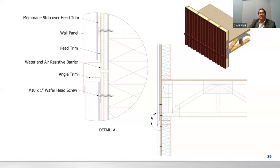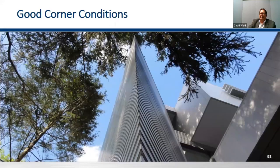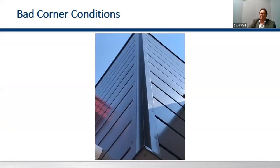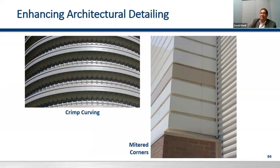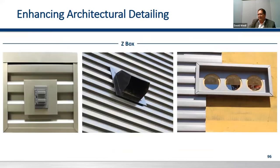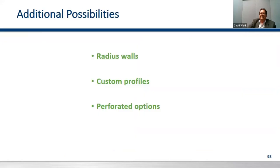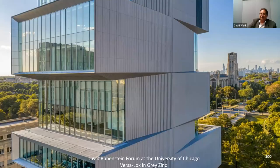If you've got a wood substrate, pay attention to what happens between floors — what happens when that wood shrinks as it settles? Corner conditions can be done very well, or they can be done with pop rivets and J-channel. Think about whether you're going to crimp curve that profile around the outside corner, or use J-boxes, Z-boxes, or a proper trim piece versus a 10-foot piece of J-channel and caulk. You can do radius panels, custom profiles, and perforated options — and those are all topics for other presentations.